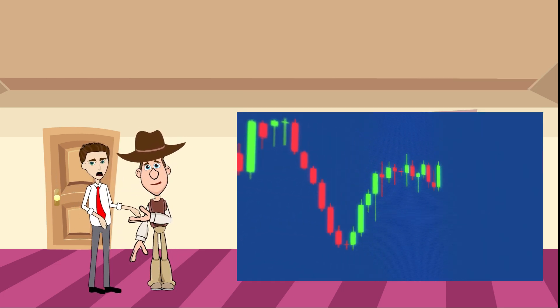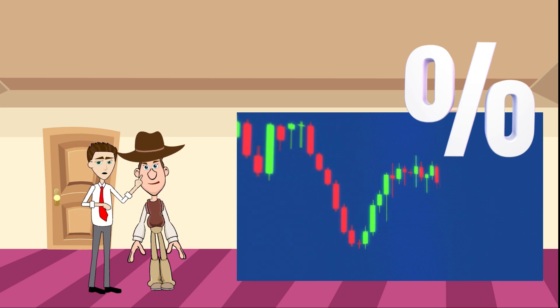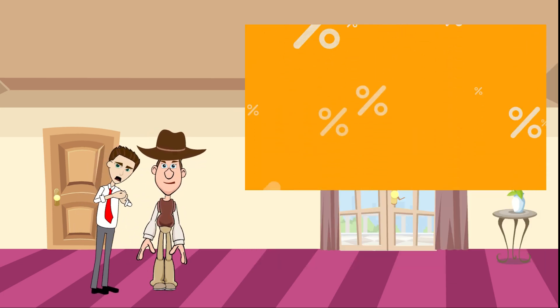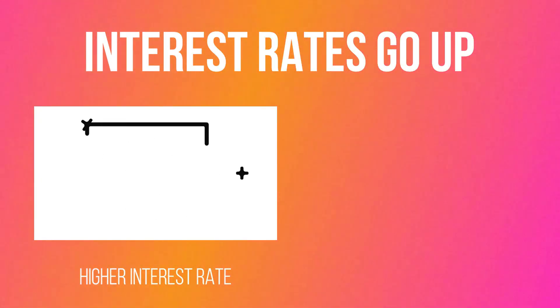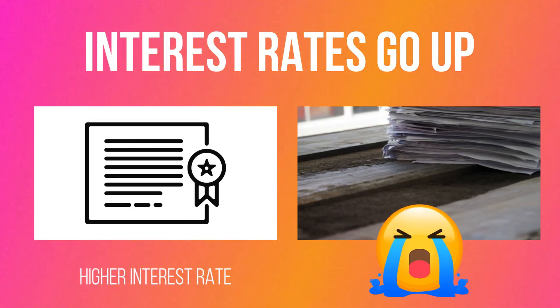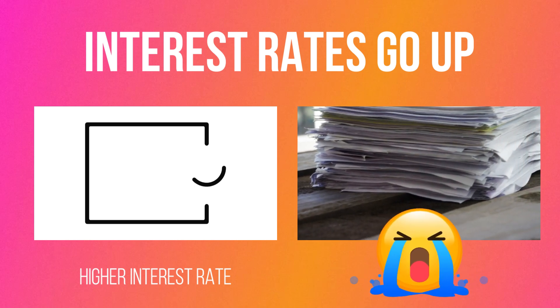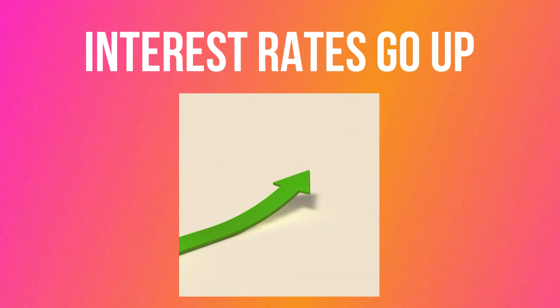There are many factors that can cause a bond's price and consequently its yield to fluctuate. The most important is prevailing interest rates. For example, when interest rates go up, new bonds are issued with a higher interest rate. This makes existing bonds with lower interest rates less attractive, so their price decreases to compensate for this reduced demand. This lower price leads to an increased yield.